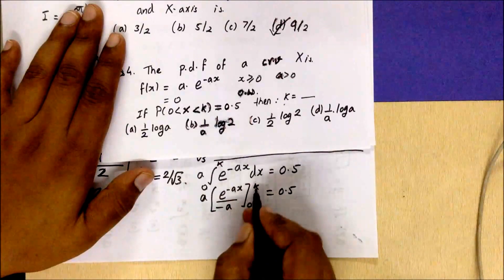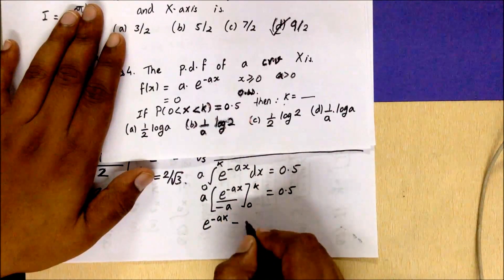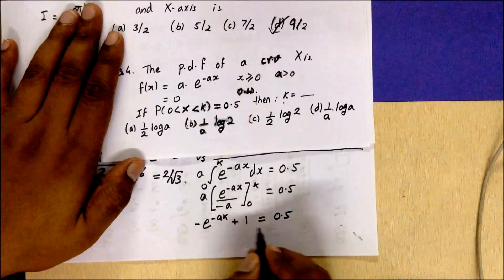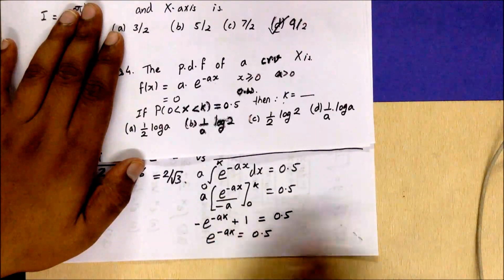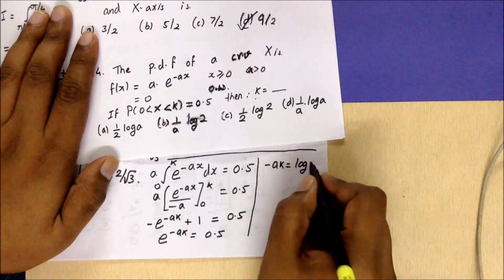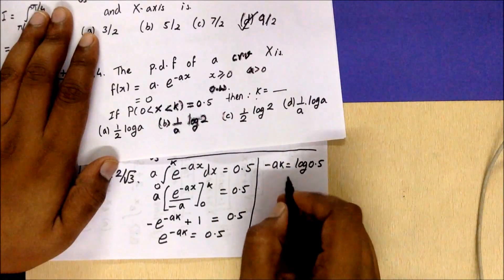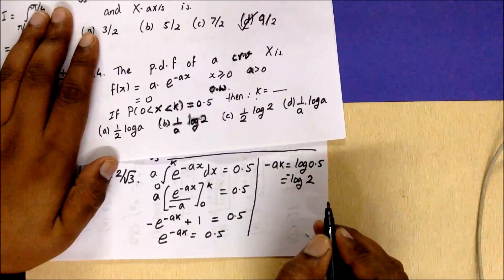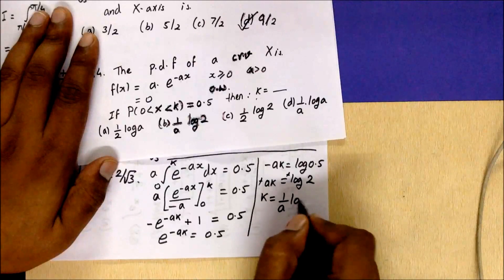Substituting limits: upper limit gives e^(−ak) and lower limit gives e^0 = 1. With the negative sign, this becomes −e^(−ak) + 1 = 0.5, so e^(−ak) = 0.5. Taking log on both sides: −ak = log(0.5) = log(1/2) = −log2. The minus signs cancel, giving k = (1/a)·log2. So that's option B.